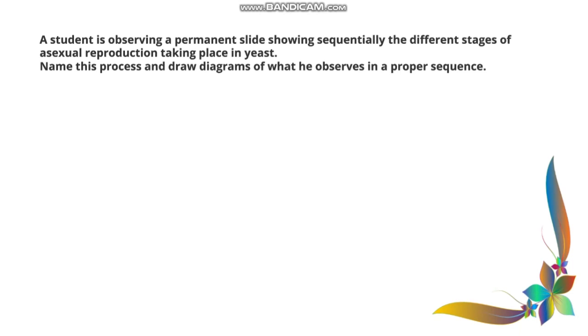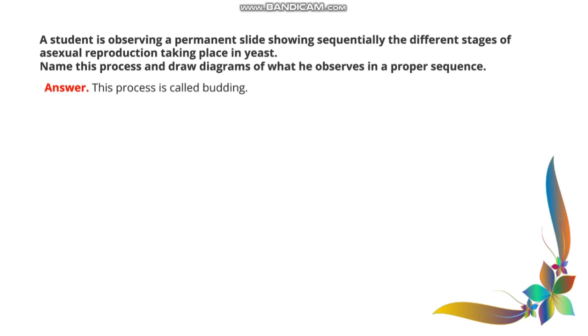A student is observing a permanent slide showing sequentially the different stages of asexual reproduction taking place in yeast. Name this process and draw diagrams of what he observes in a proper sequence. The answer is: the process is called budding.